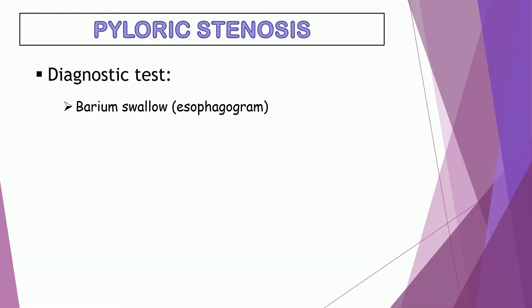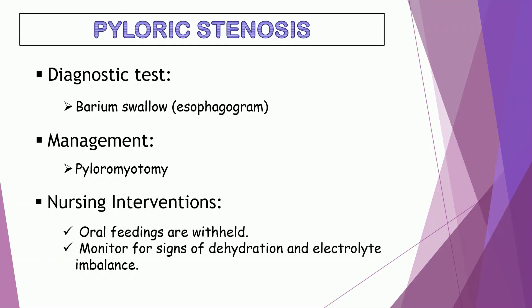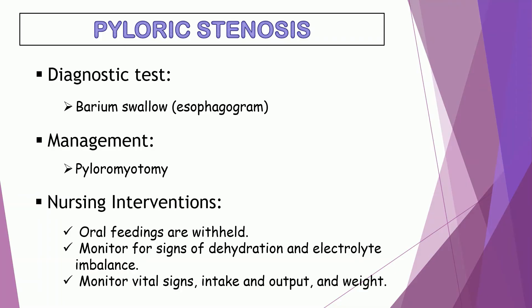The diagnostic test is a barium swallow, also called an esophagogram. It is an imaging test to check problems in the upper GI tract. Management: pyloromyotomy, which is done to widen the pylorus. Nursing interventions: oral feedings are withheld to prevent further electrolyte depletion. Monitor for signs of dehydration and electrolyte imbalance. Finally, monitor vital signs, intake and output, and weight of the patient.